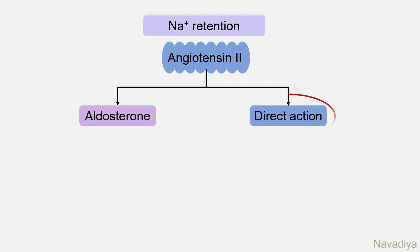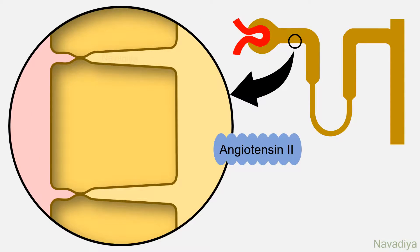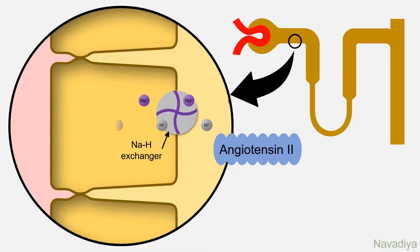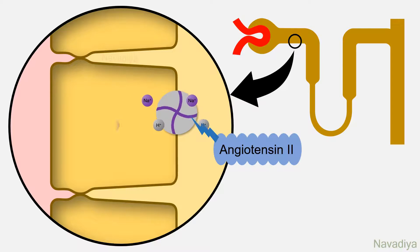Now let's see the direct effects of angiotensin II. First, it acts on the proximal tubule, where various transporters are involved in sodium reabsorption, one of them being the sodium-hydrogen exchanger. Angiotensin II increases activity of this exchanger, which contributes to increasing sodium reabsorption.